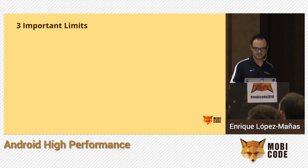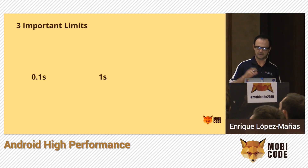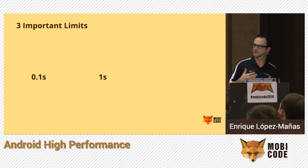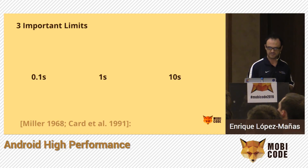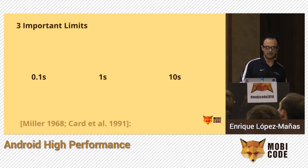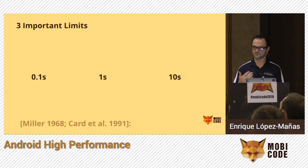When it comes to software responsiveness, there are three very important limits. 0.1 seconds is the amount of time the user perceives as immediate — no lag detected. Under one second, the user can perceive the lag. At 10 seconds, the user loses focus and switches to another application. This was published in a couple of papers available for free — there's an entire literature on responsiveness and the relationship between software speed and user engagement. I recommend reading them; they're very fast reads.